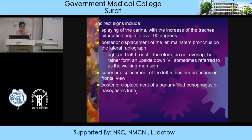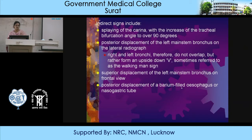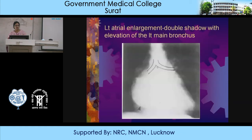Indirect signs of left atrial enlargement include: splaying of the carina with increase of the tracheal bifurcation angle to over 90 degrees; posterior displacement of the left main stem bronchus on the lateral radiograph (since the left main stem bronchus forms the posterior and superior border of the left atrium, if it is pushed back, the left atrium is enlarged); the right and left bronchi will not overlap but form an inverted V sign, sometimes called the walking band sign; superior displacement of the left main stem bronchus on the frontal view; and posterior displacement of a barium-filled esophagus or nasogastric tube.